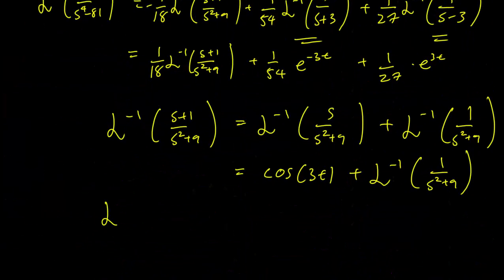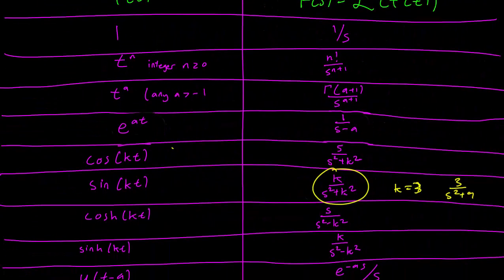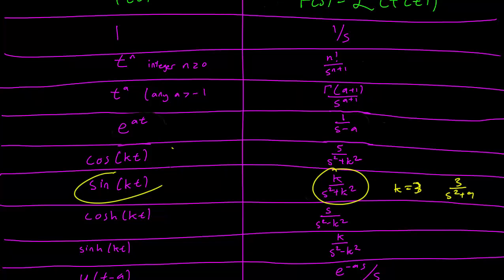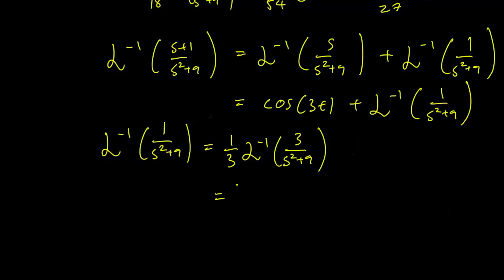The Laplace inverse transform of 1 over s^2 plus 9 is going to be equal to... We want a 3 in the numerator. So what we do is divide by 1 over 3, and we have a 3 in the numerator. And this gets us exactly what we want. So setting k equals 3, it gets us 1 third sine 3t.